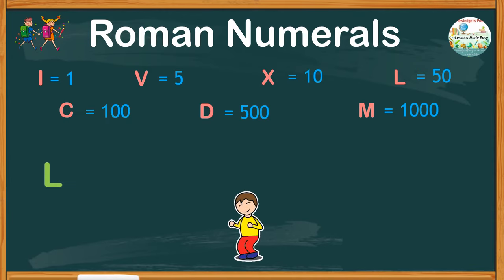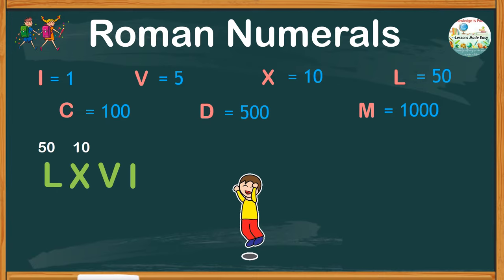First one, we have L, X, V, I. Can you guess the number? Remember, if L is 50, X is 10, V is 5, and I is 1, add them all together, we have 66.